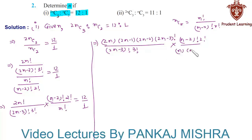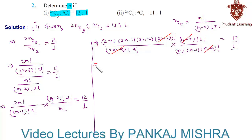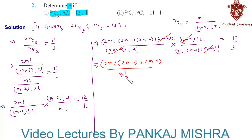And n factorial can also be written as n into (n minus 1) into (n minus 2) factorial. This is equal to 12 upon 1. Here we can cancel (2n minus 3) factorial from numerator and denominator, and we can cancel (n minus 2) factorial. So we are left with 2n into (2n minus 1) into, taking 2 common, 2 into (n minus 1), over 3 factorial into 2 factorial, over n into (n minus 1), is equal to 12 upon 1.